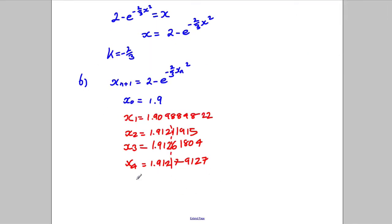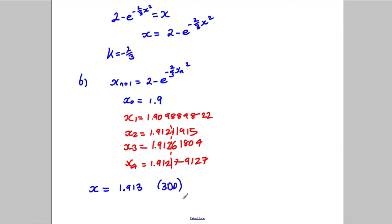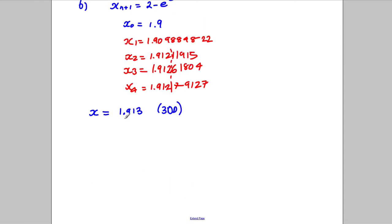Therefore, as far as we can see, the answer for x rounded to 3 decimal places is 1.913, because all the subsequent digits are bigger than 5. So that's the answer to 3 decimal places, and we need to justify that the answer is correct.